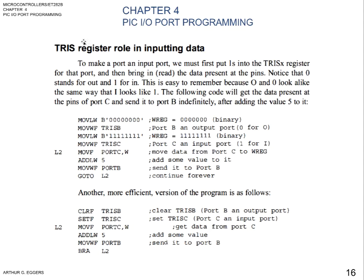Now we continue with the tri-state register role in inputting data. Between ports and the tri-state buffers, they work hand-in-hand in making sure that the data is where it belongs. To make an input port, we must first put 1s into the tri-state buffer or register for that port, and then read the data present at the pins. Notice that 0 stands for out and 1 stands for in.